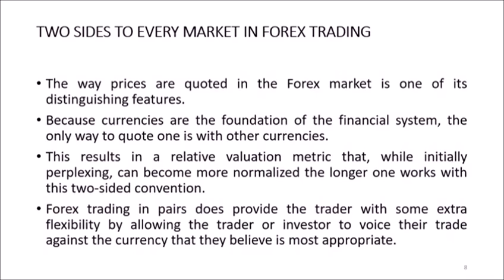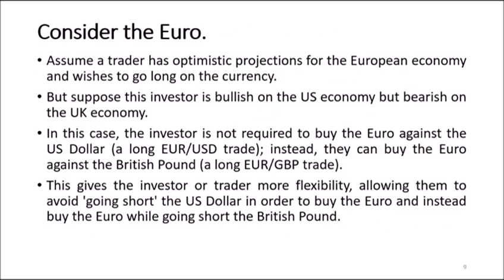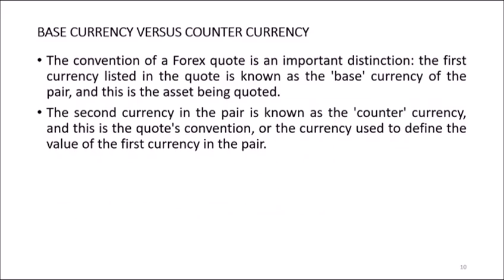Consider the euro as an example. Assume a trader has optimistic projections for the European economy and wishes to go long — meaning buying — the currency. But suppose this investor is also bullish on the US economy but bearish on the UK economy. In this case, the investor is not required to buy the euro against the US dollar. Instead, they can buy the euro against the British pound — a long EUR/GBP trade. This gives the investor more flexibility, allowing them to avoid going short the US dollar in order to buy the euro, and instead buy the euro while going short the British pound.